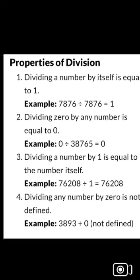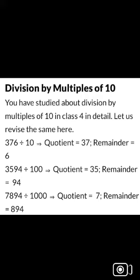Fourth, dividing any number by zero is not defined — for example, three thousand eight hundred ninety-three divided by zero is not defined. Division by multiples of ten: three hundred seventy-six divided by ten gives quotient thirty-seven and remainder six.